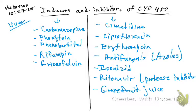Grapefruit juice is also an inhibitor of the CYP450. To review the inhibitors: cimetidine, ciprofloxacin, erythromycin, antifungals, isoniazid, ritonavir, and grapefruit juice. Some drugs are metabolized in the liver and others in the kidney, but these inducers and inhibitors work specifically at the CYP450 in the liver.